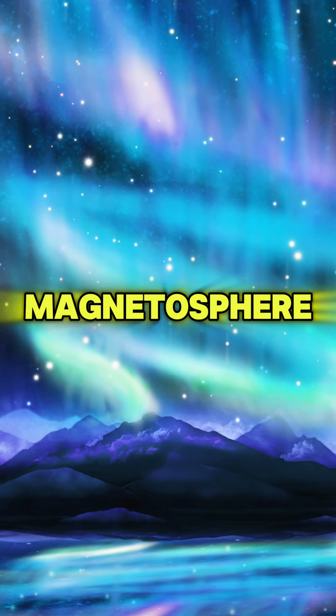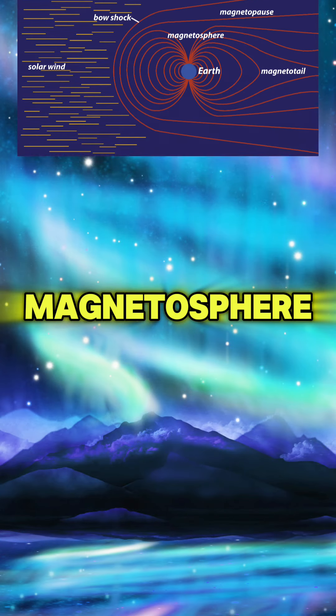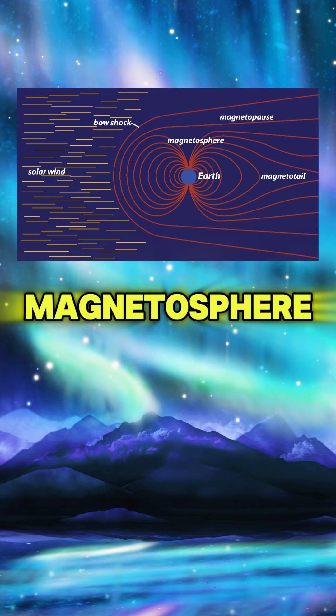Step two: magnetosphere. The Earth's magnetosphere is the region surrounding the Earth controlled by its magnetic field. When these charged particles from the solar wind encounter the Earth's magnetosphere, they get deflected by its magnetic field. However, some of these particles actually manage to penetrate the magnetosphere near the magnetic poles, particularly in regions called the auroral ovals.